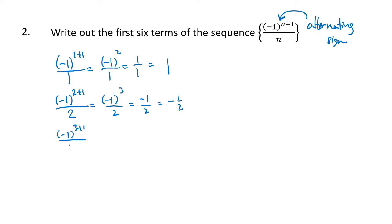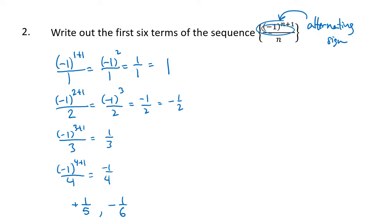The next term is minus 1 to the 3 plus 1 divided by 3, which is 1 third. The fourth term, minus 1 to the 4 plus 1 divided by 4, will be minus 1 fourth. So we've got 1, minus 1 half, plus 1 third, minus 1 fourth, then plus 1 fifth, and finally the sixth term is minus 1 sixth. You're going to see this expression — minus 1 to a power — pretty frequently because it gives us a way, in a formula, to get an alternating sign.